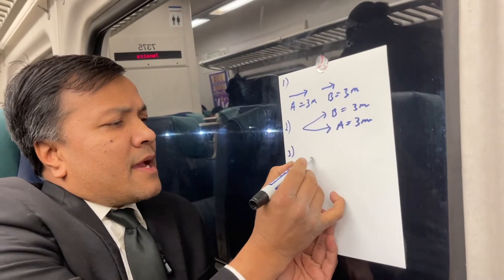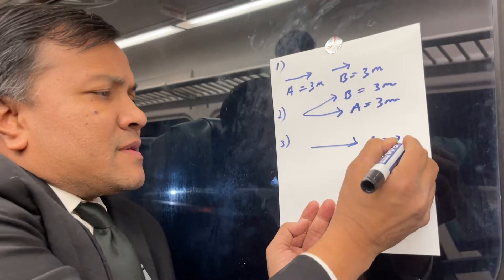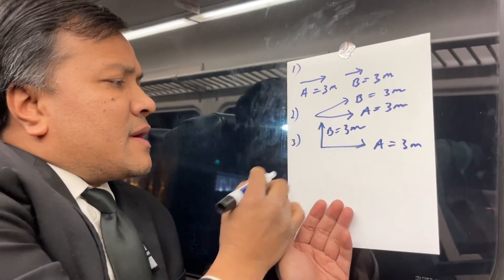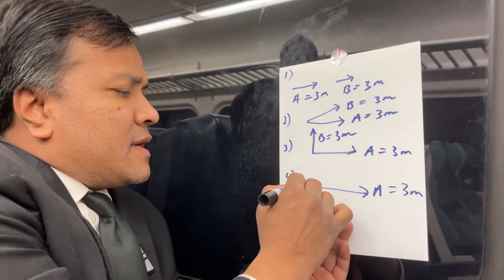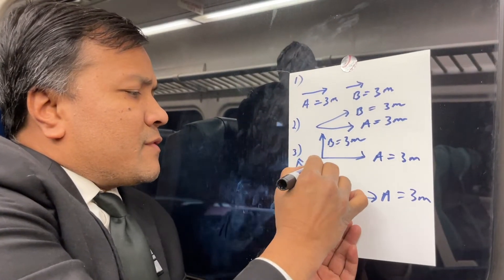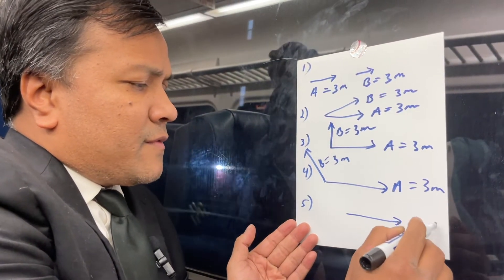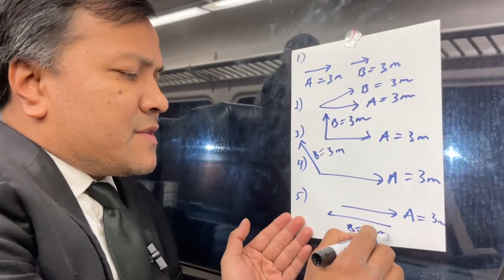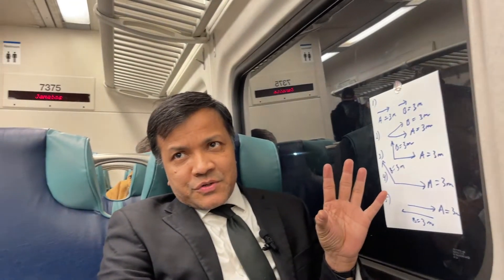Scenario three — again two vectors — vector A is three meters and vector B is three meters. Scenario four: vector A three meters and vector B three meters. And the last scenario five: vector A three meters and vector B three meters. As you can see, all five scenarios have the same magnitude, however the directions are different.